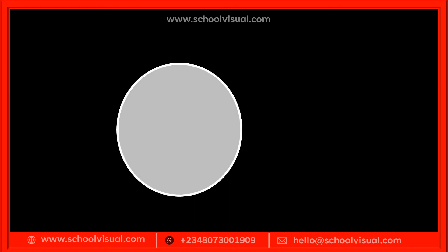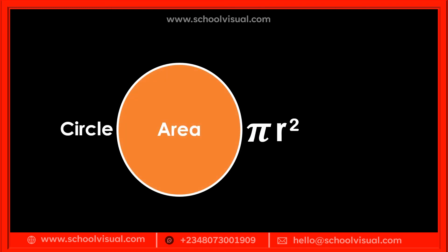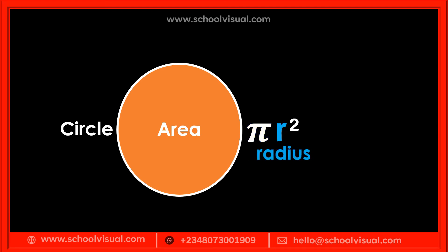The area of a circle is pi r squared. Pi stands for 22 over 7, which is a constant — whenever we see pi, we write it as 22 over 7. We can also use pi times d, where d stands for diameter.